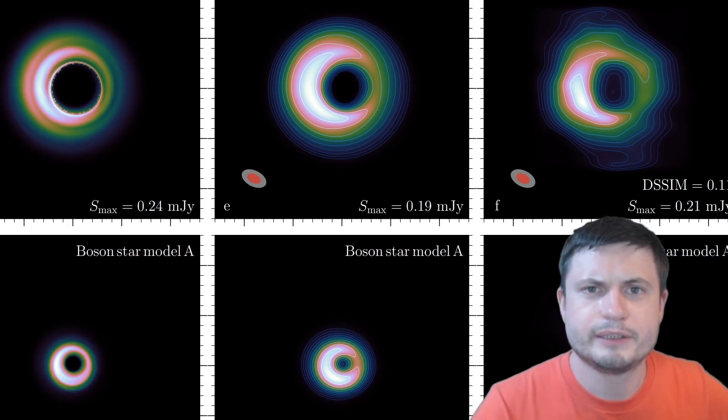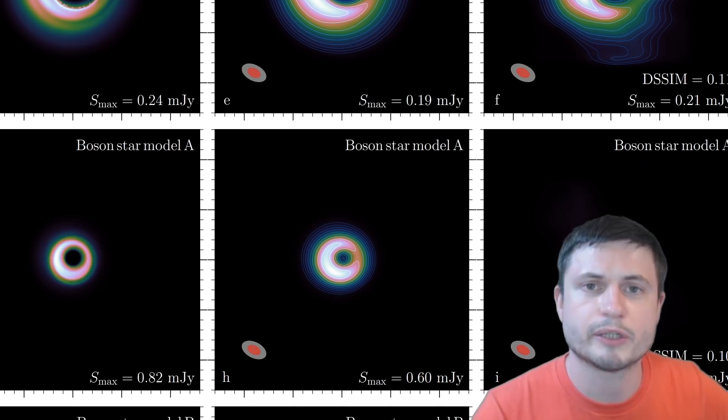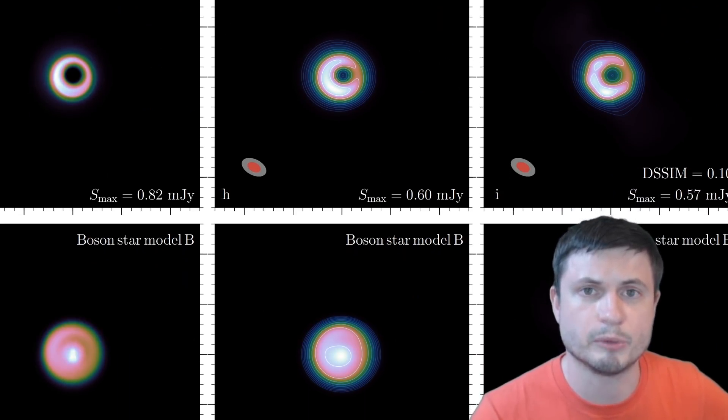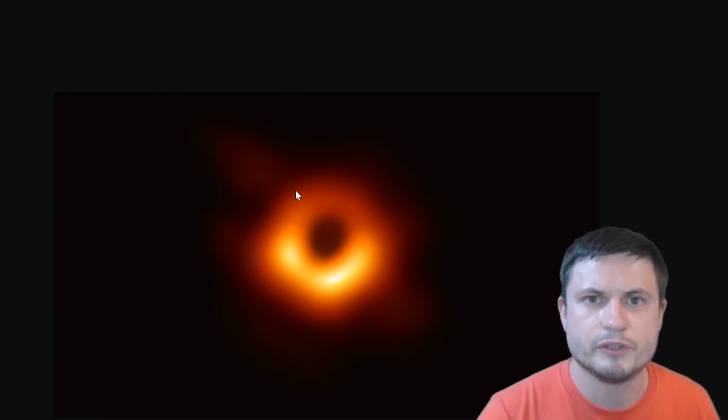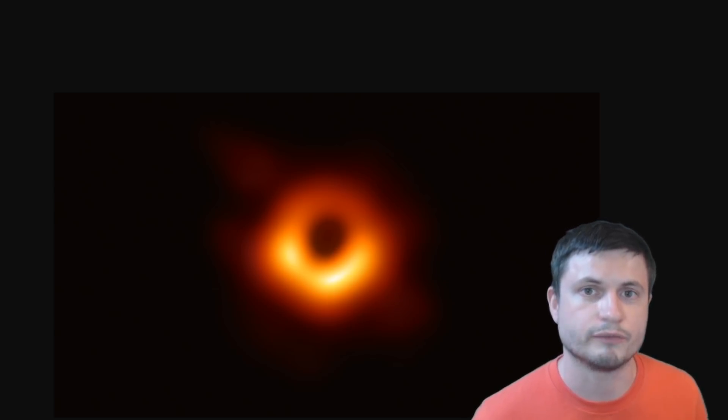And so other than the size of the event horizon or the shadow of the black hole, it's somewhat difficult to tell them apart. But interestingly, when the scientists tried to analyze the famous M87 black hole, because of the size of the shadow in the black hole, they knew right away that this is definitely not a boson star.